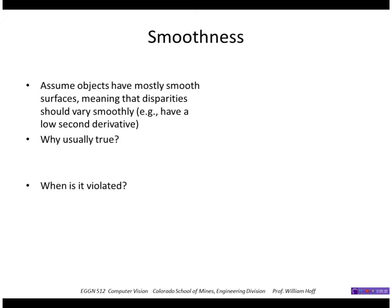Another commonly used heuristic is smoothness: we assume that objects have mostly smooth surfaces, meaning disparities should vary smoothly. That's usually true in the real world, certainly for manmade objects, except at places where you have depth discontinuities — at those points, smoothness does not hold.